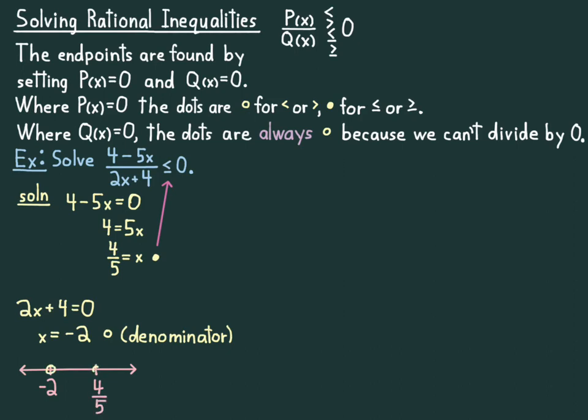So we graph these two points, one at -2 and one at 4/5. That divides the line into three regions. I need to see which regions lie in the solution set. So I want to try test points from each region. I probably picked -3, 0, and 1. Yep, -3, 0, 1.